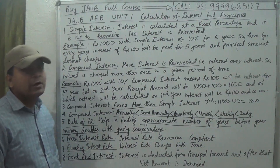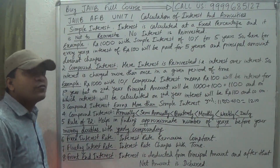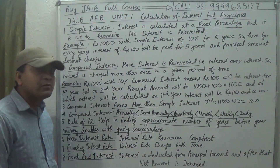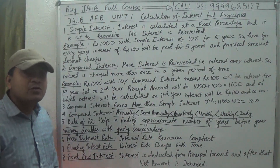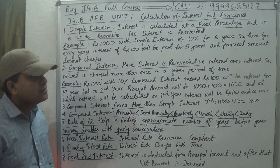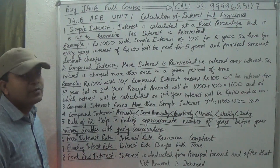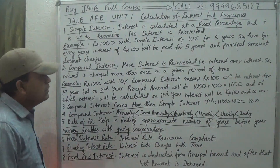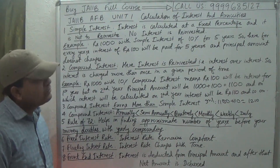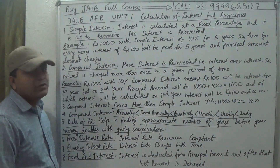For doing calculations of compound interest, at least two periods are required. If anyone asks compound interest for one year and simple interest for one year, both answers will be the same. Answers start differentiating from the second period onwards. If there are three periods, interest changes two times; four periods, then three times — and so on.